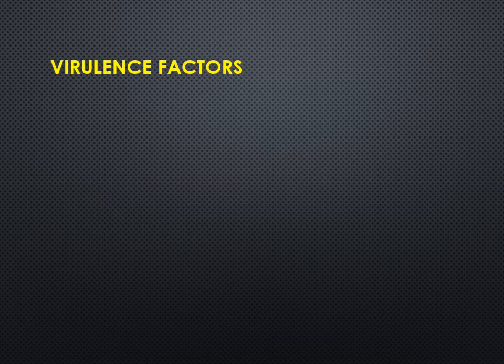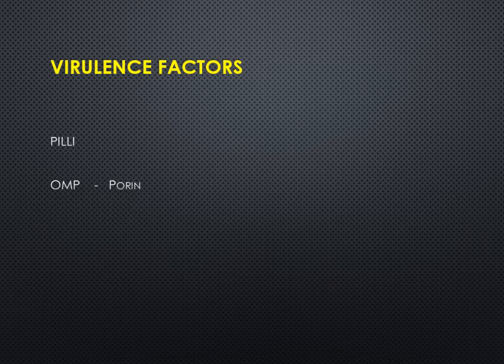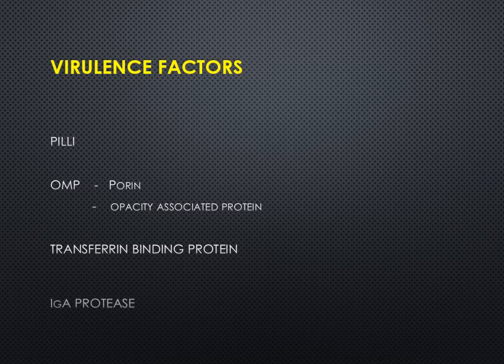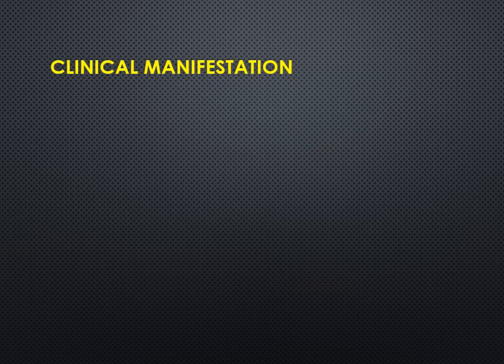The virulence factors include: pili, which is the most important — it helps in adhesion of the bacteria to the host cell and prevents phagocytosis; outer membrane proteins, which help in making pores and exchange of molecules; opacity-associated proteins, which also help in adhesion to neutrophils; and transferrin-binding protein and IgA protease — all helping in causing disease.